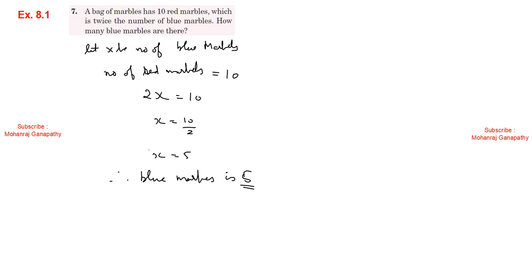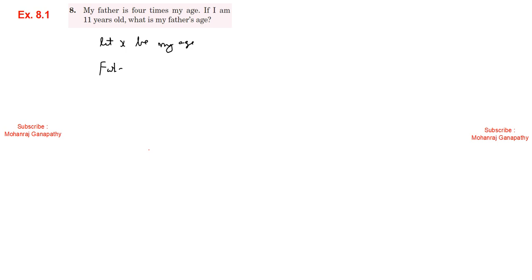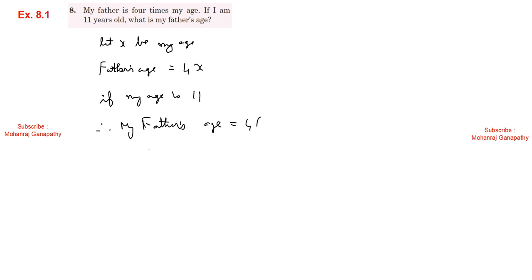Exercise 8.1, Sum number 8: My father is 4 times my age. Let x be my age. Father's age equals 4 times my age, which is 4x. If I am 11 years old, therefore my father's age is 4 times 11, which is 44 years.